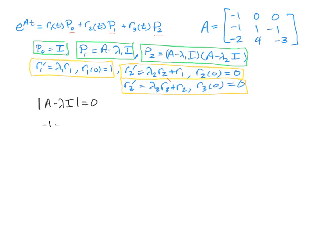So in this case, we've got negative 1 minus lambda, 0, 0, negative 1, 1 minus lambda, negative 1, negative 2, 4, and negative 3 minus lambda. And again, this determinant is going to be equal to 0.